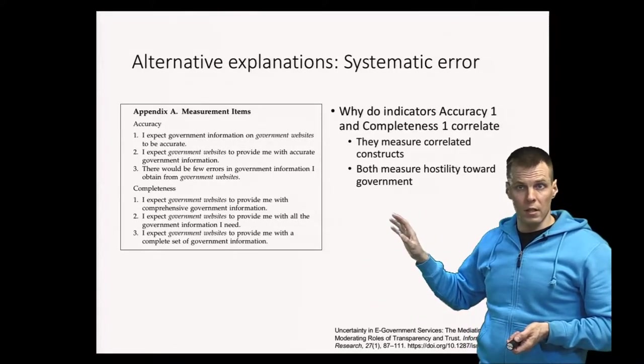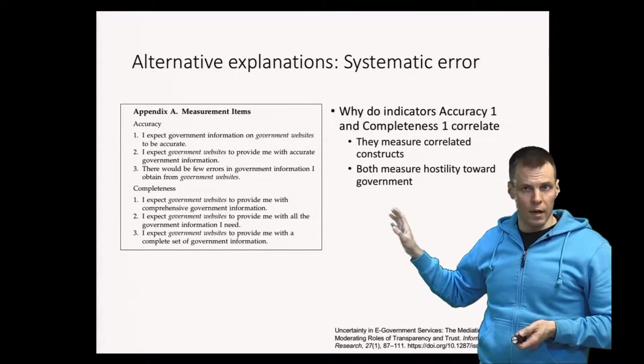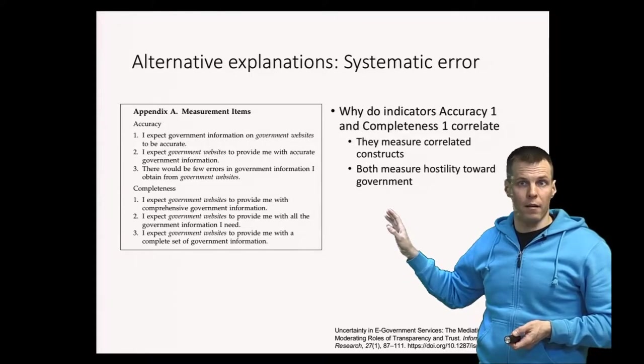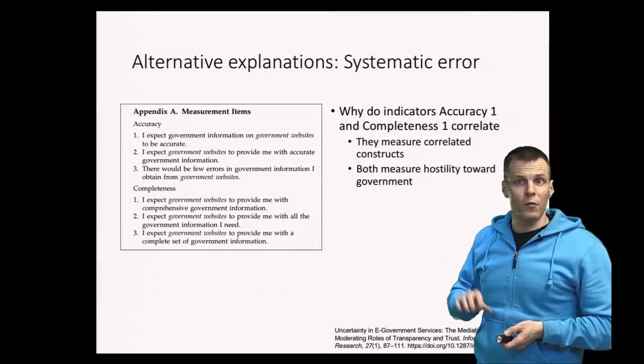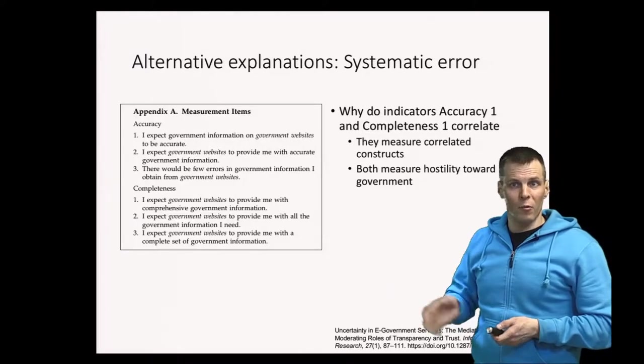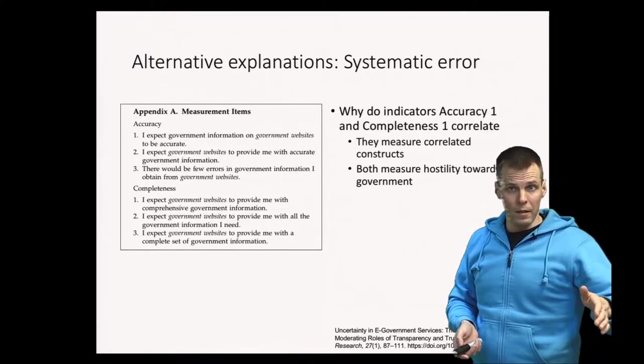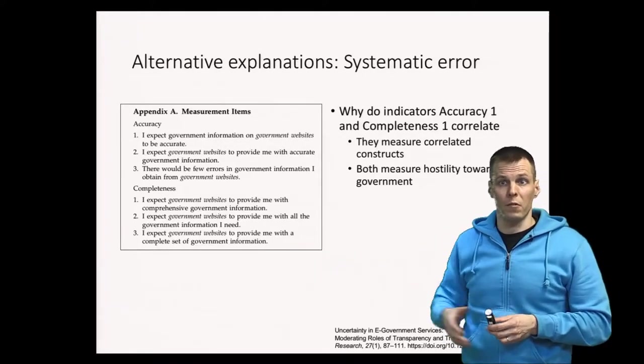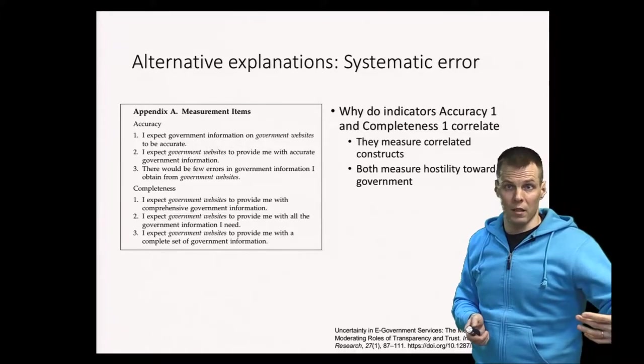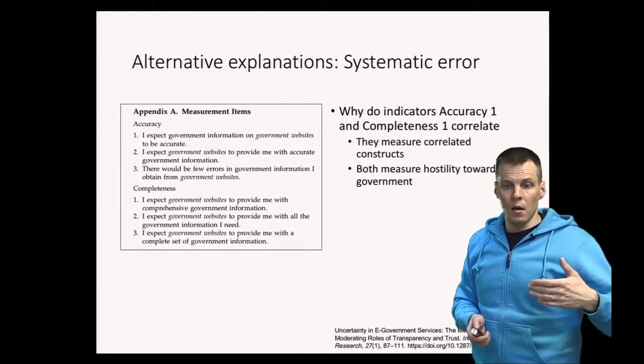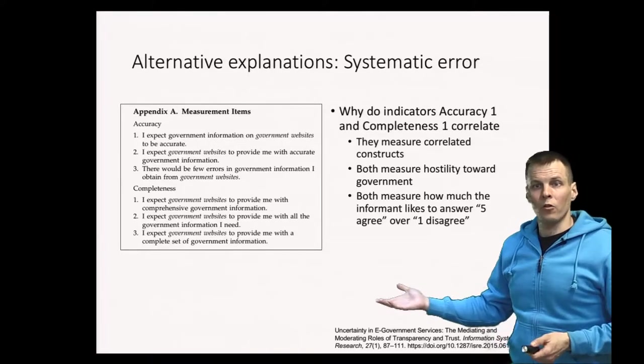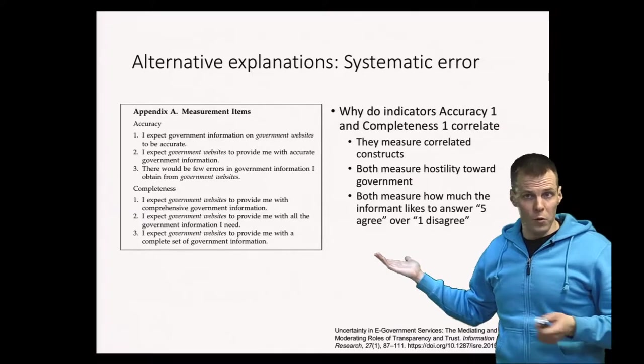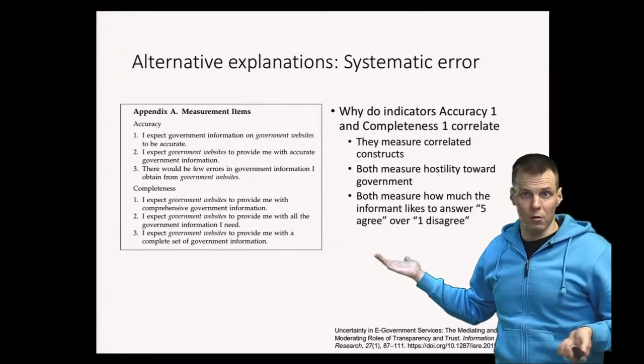Instead they measure hostility toward government. Particularly if you do this in the United States, where I think this research was done, there are people who really think that government shouldn't be doing any services for people and they are openly hostile to government. So if you're hostile to government, you're going to rate all these indicators to small numbers, and if you like government services, you'll rate them to high numbers, regardless of the accuracy of data and completeness of the data. Or they could just measure how much the informant wants to answer ones versus fives when asked to agree on an item.